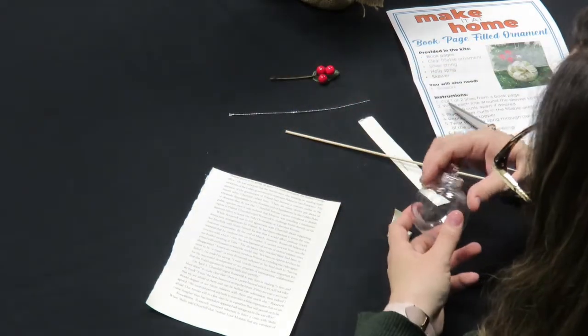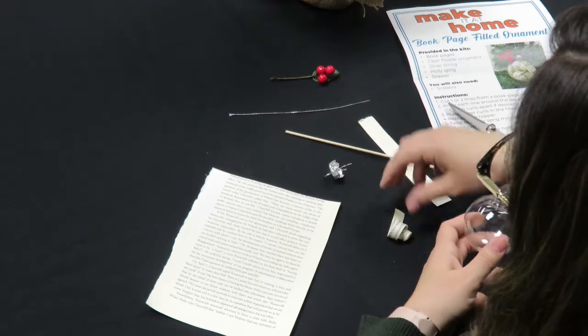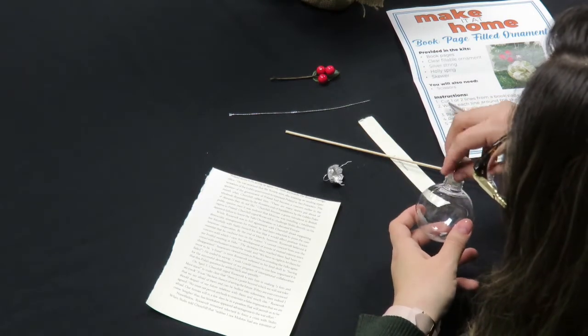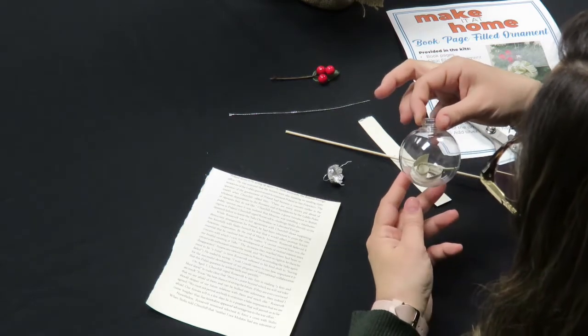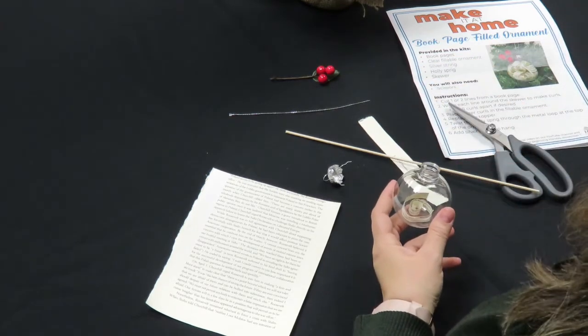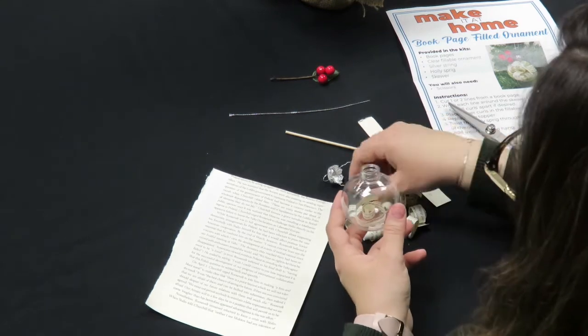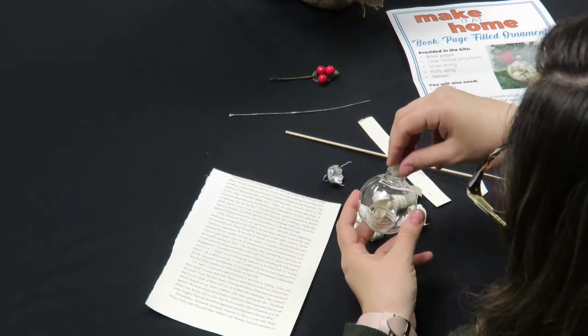You're going to take your ornament, take the topper off, and place the curl inside. Continue to do this until it's completely full. Let it wrap around.